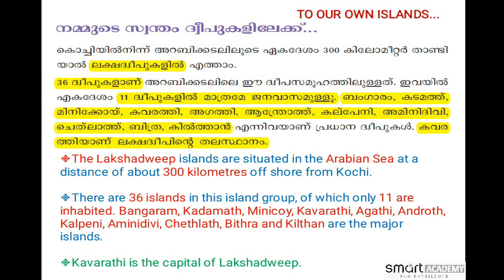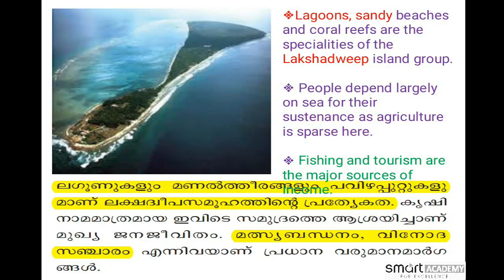The Lakshadweep Islands are situated in the Arabian Sea at a distance of about 300 km offshore from Kochi. There are 36 islands in this island group, of which only 11 are inhabited. The lagoon, sandy beaches and coral reefs are the speciality of the Lakshadweep island group. People depend largely on the sea for their sustenance as agriculture is sparse here. Fishing and tourism are major sources of income.